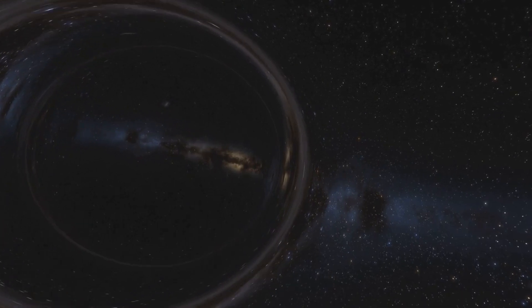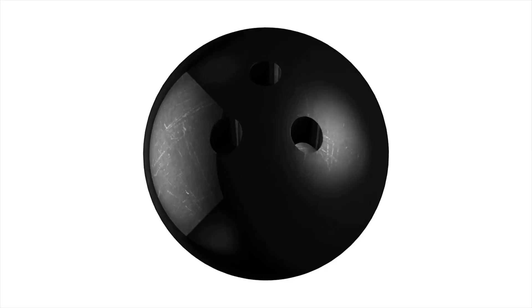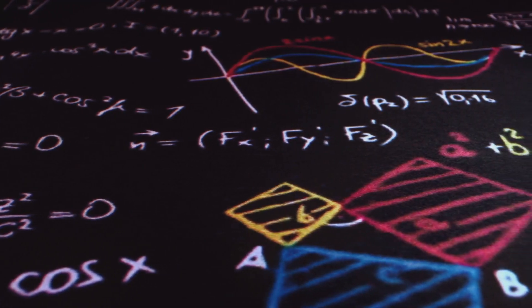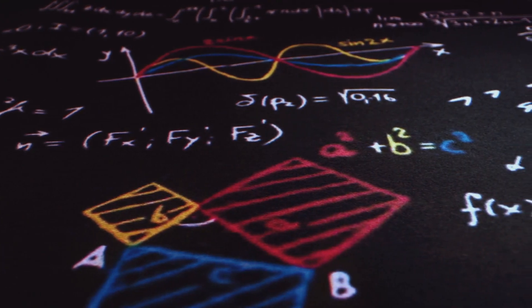Einstein's general relativity describes gravity as the curvature of space-time caused by mass and energy. Imagine a bowling ball on a trampoline - the ball creates a dip distorting the surface. Similarly, massive objects warp space-time, creating gravity. Within this framework, mathematical solutions predicted the existence of not only black holes but also white holes. These solutions suggested space-time could be curved outward, giving rise to a white hole.